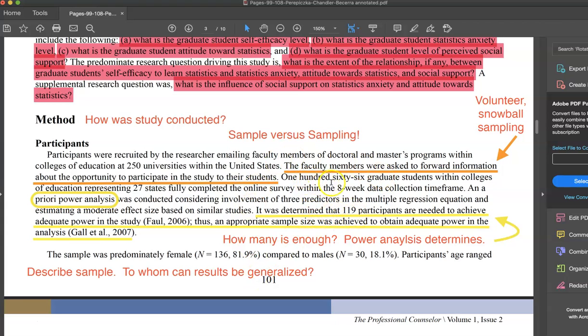So in this case, 166 is more than adequate for their participants, and it would also provide enough power for them to say that the findings mattered.